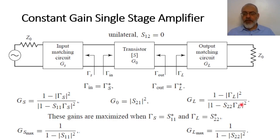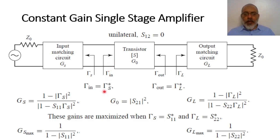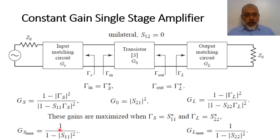For the maximum gain amplifier, Γ_in is conjugate matched to Γ_source, and for a unilateral transistor Γ_in = S11. This means Γ_source = S11*. Substituting this, G_S becomes (1−|S11|²) / |1 − |S11|²|², which simplifies to 1/(1−|S11|²). So the maximum gain for the input matching network in the unilateral case is G_S_max = 1/(1−|S11|²).